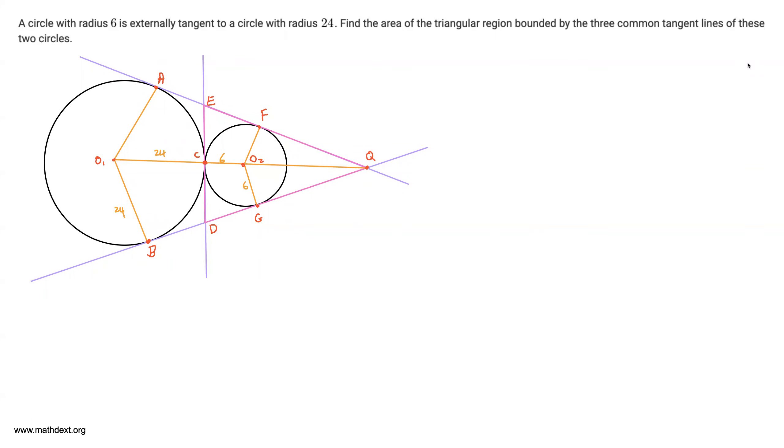A circle with radius 6 is externally tangent to a circle with radius 24. Find the area of the triangular region bounded by the three common tangent lines of these two circles.